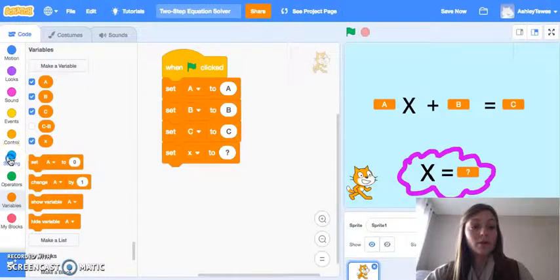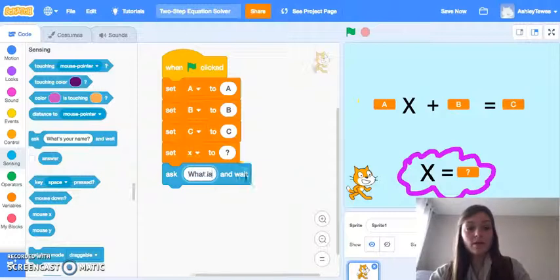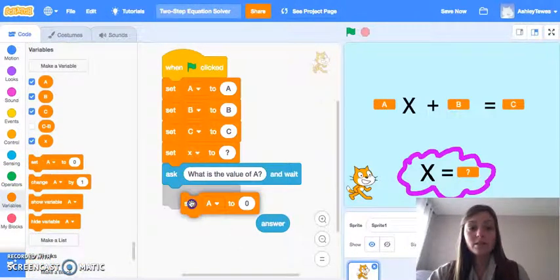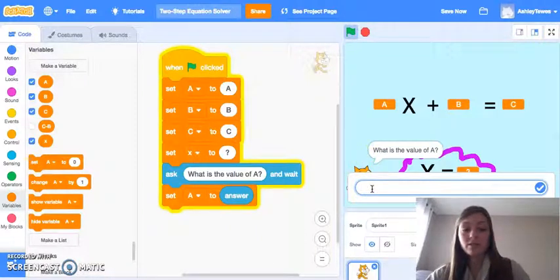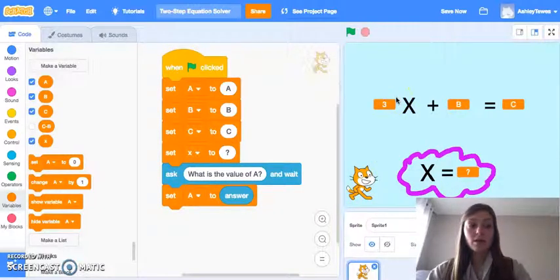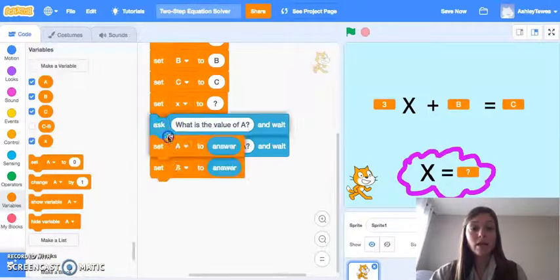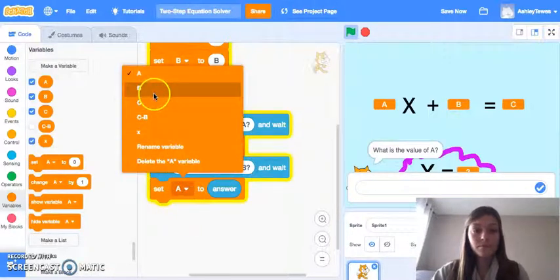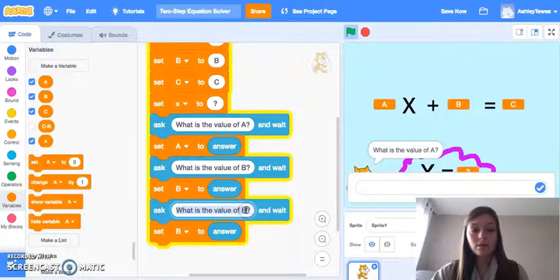Now the next piece I'm going to want to do is I'm going to want to ask my user what the values of A, B, and C are. So we'll ask what is the value of A, and whatever they type in is going to be stored in this answer block. We'll come down here, and we'll set the value of A to the answer they type in. So notice if we tried this, the value of A will say is 3, and notice this variable changes here. So we're going to do this very same thing for the values of B and C. You can right-click and click duplicate, and we can just change B, and we'll get C as well.